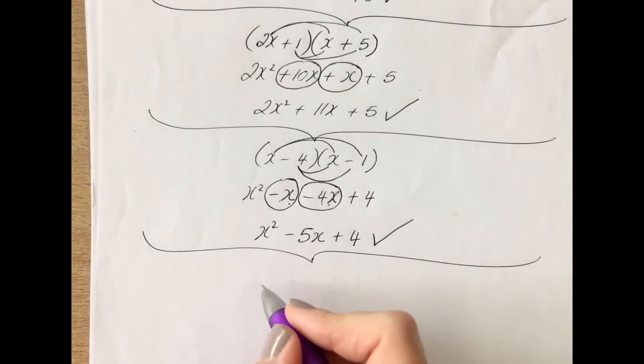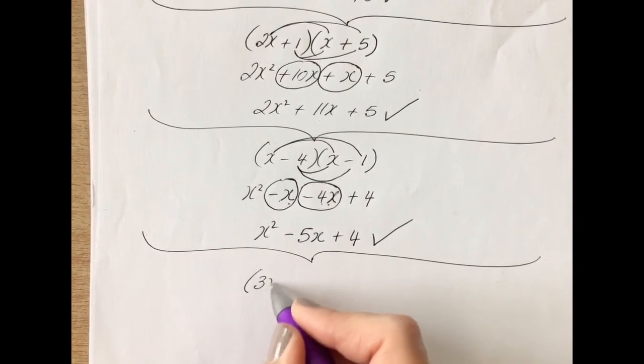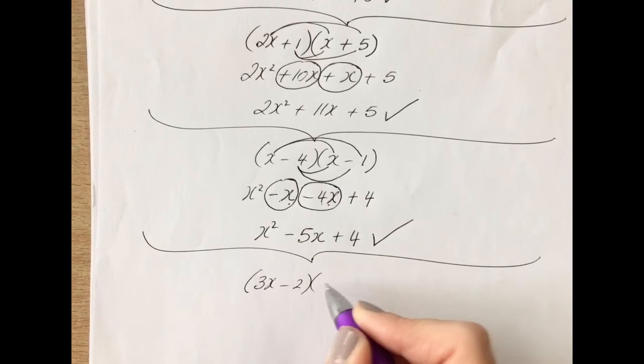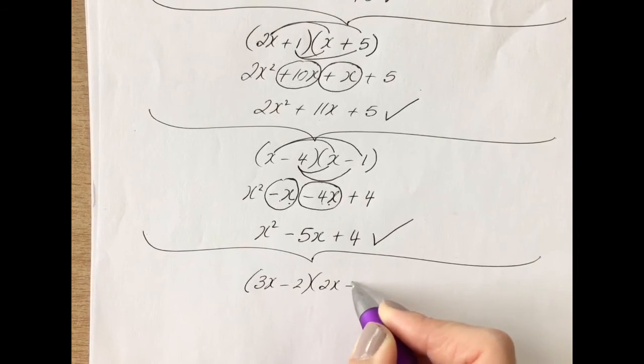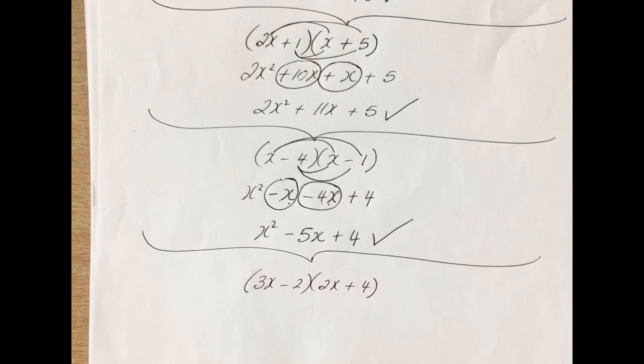Last question. Try this one. 3x minus 2 in one bracket and 2x plus 4 in the other. Press pause and see how you get on with this.